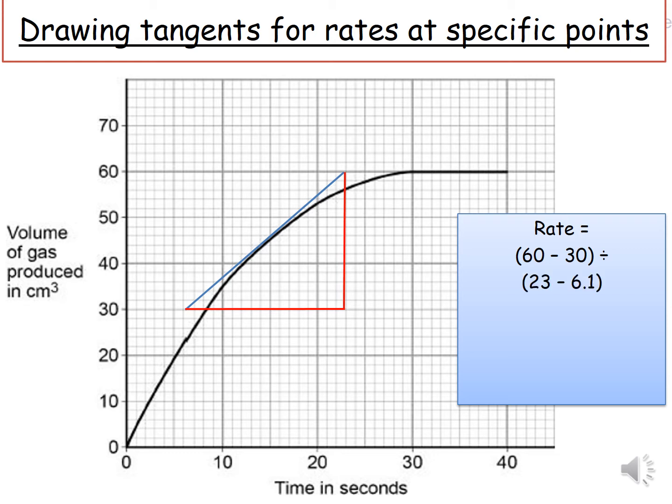In this case, it would be 60 minus 30 divided by 23 minus 6.1. Our rate is equal to 30 divided by 16.9. So our rate of reaction is 1.775, the unit, centimeter cube per second.